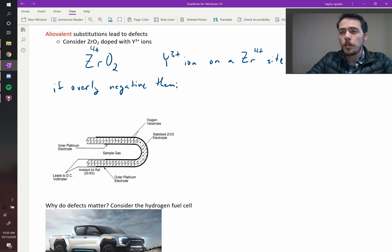If it's overly negative, then we have two options. One, we can add positive. What would that look like? Adding positive means that we're going to stuff extra cations into the structure as interstitials. You can put things in interstitial sites, but it tends to cost more energy because you're crowding things around the lattice. So that's less likely.